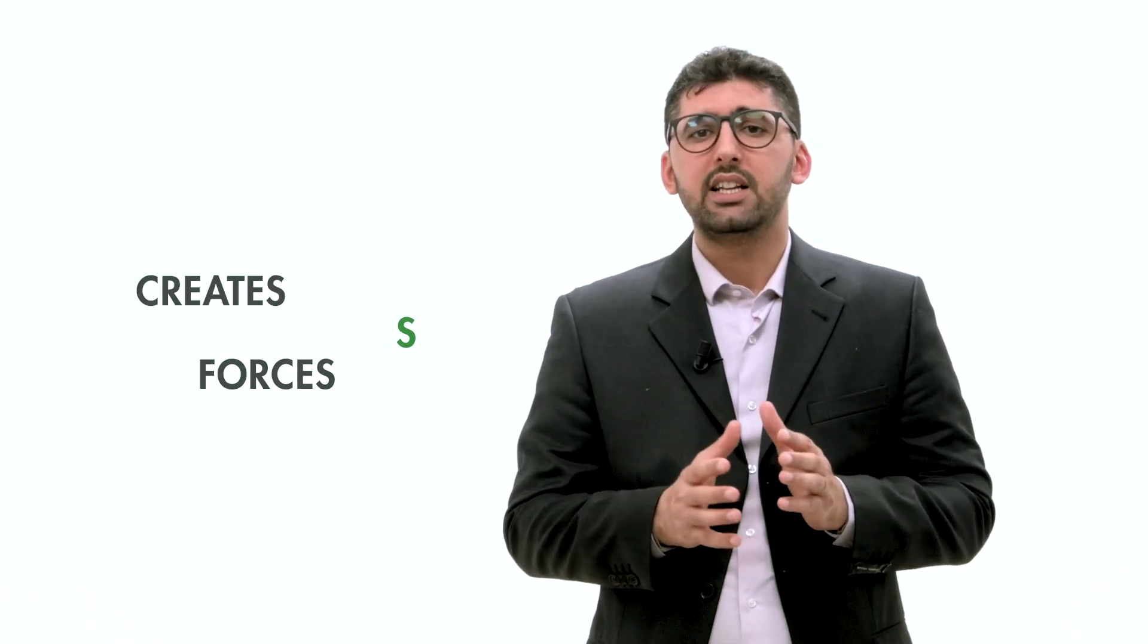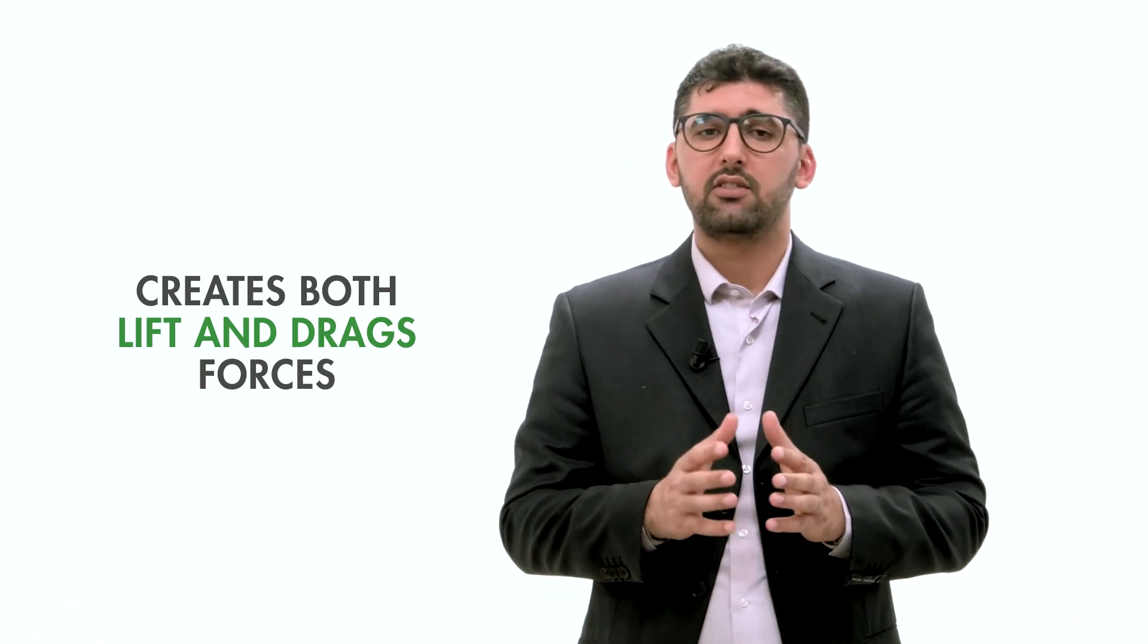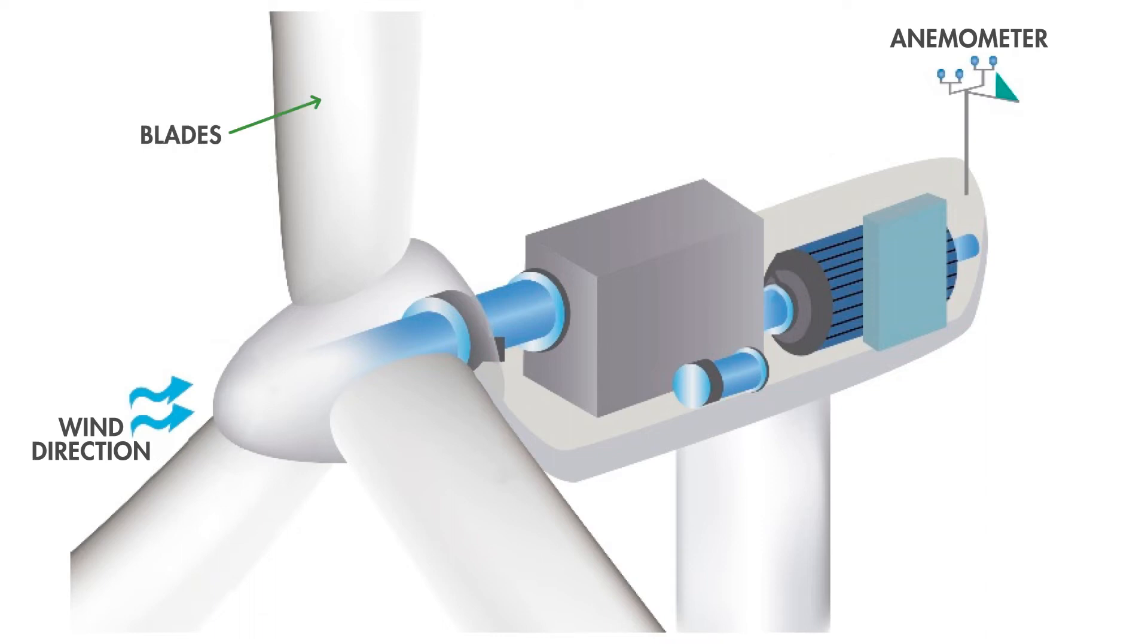The energy in the wind is harnessed by the use of a wind turbine. The wind turbine consists of two to six blades. When the wind flows across the blade, the air pressure on one side of the blade decreases. The difference in air pressure across the two sides of the blade creates both lift and drag forces. The blades are usually designed in such a way that the resultant lift force is much stronger than the drag force and this causes the rotor to spin.